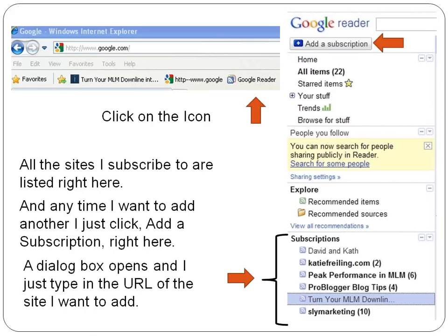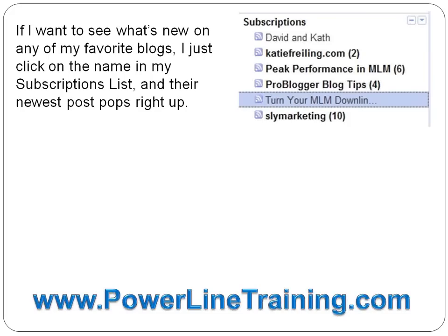Simple. Then the dialog box opens up. I just type in the URL of the site I want to add, and it gets added to my Subscriptions list. If I want to see what's new on any of my favorite blogs, I just click on the name in my Subscriptions list, and the newest post pops right up.